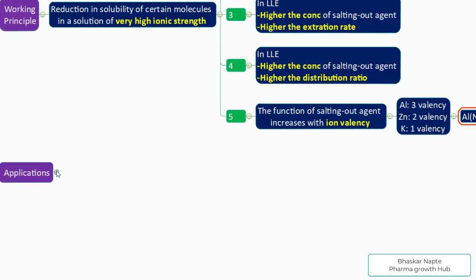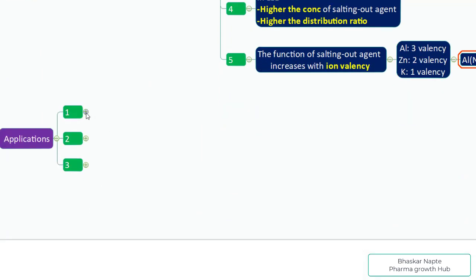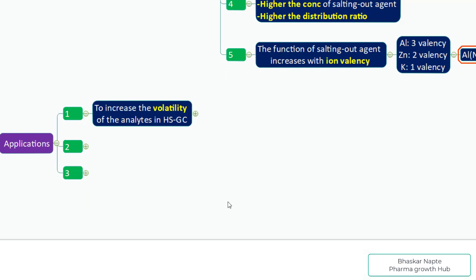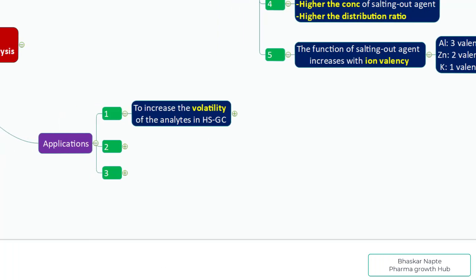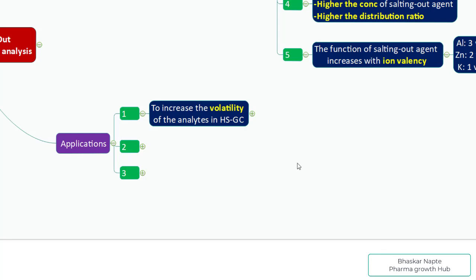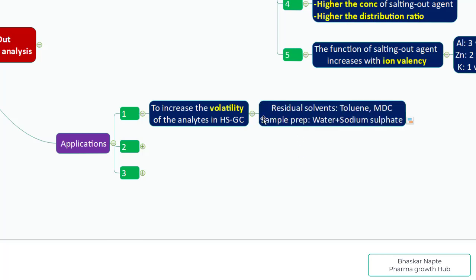Now let us understand three important applications. The first is to increase the volatility of analytes in headspace GC extraction. I recall when I started my career I was adding sodium sulfate while crimping the headspace vial without knowing why — I was actually using the salting out effect. In headspace gas chromatography analysis, you can increase the volatility of your residual solvents by adding a salting out agent like sodium sulfate or sodium chloride.